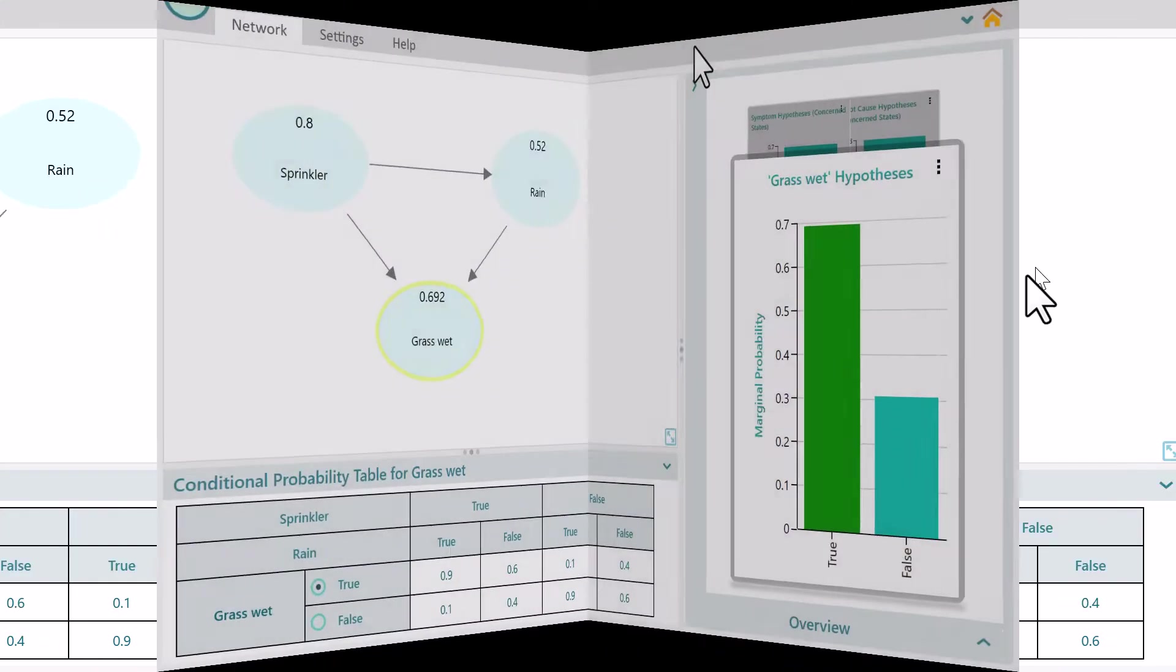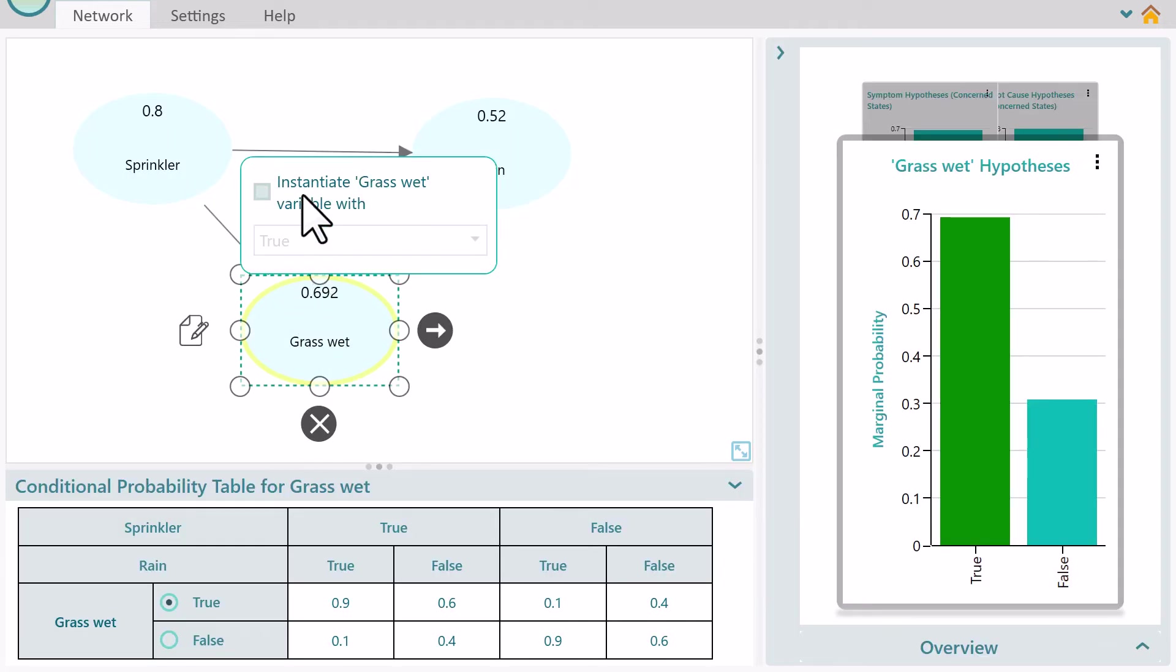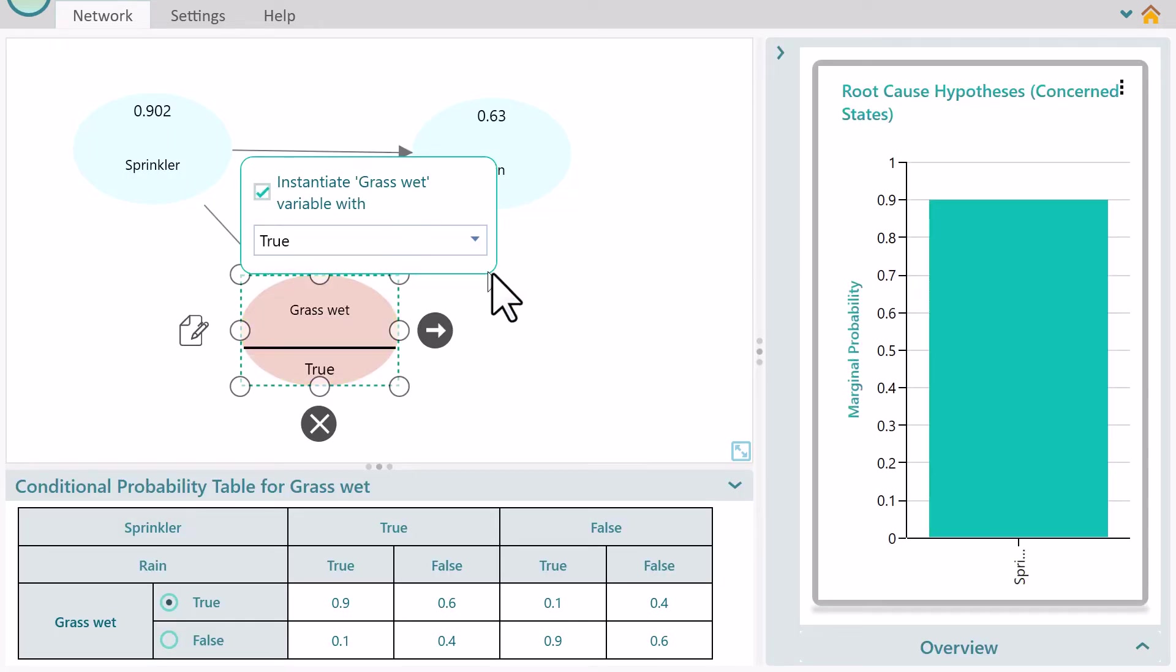Have you got confirmation about any evidence? Instantiate the variable from the diagram.